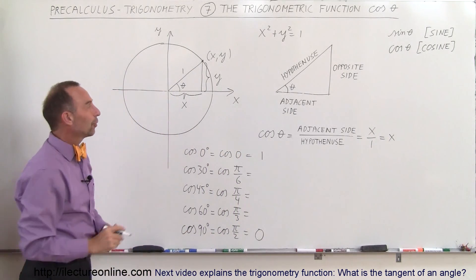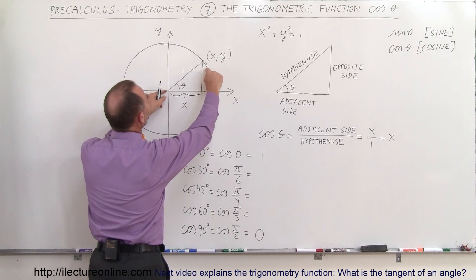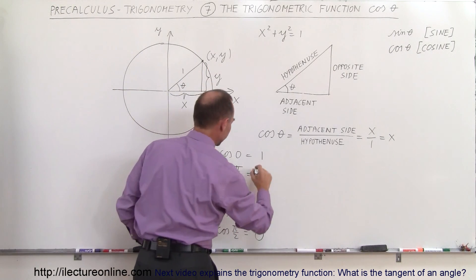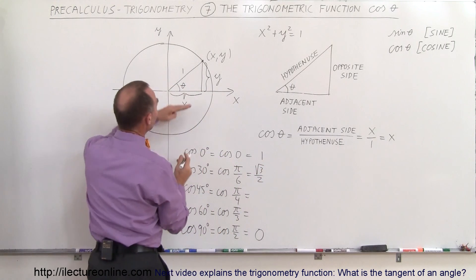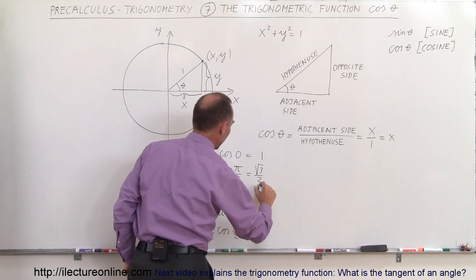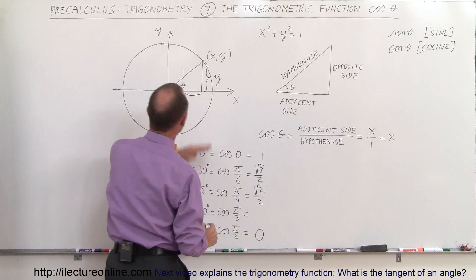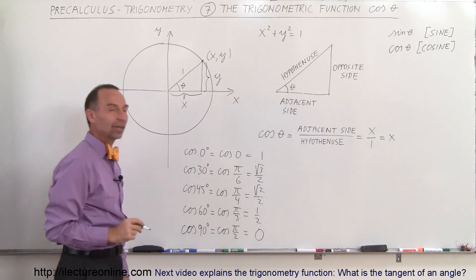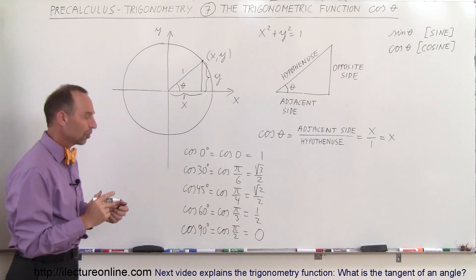What about the cosine of 30 degrees? Well, at 30 degrees, we realize that the x-value there would be the square root of 3 over 2. At 45 degrees, it's the square root of 2 over 2. At 60 degrees, it's 1 half, and at 90 degrees, it's 0. So it's exactly opposite to the sine.